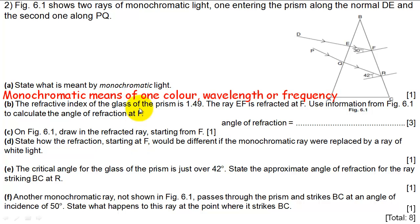Now it tells us the refractive index of the glass is 1.49. The ray EF is refracted at F. Use information from figure 6.1 to calculate the angle of refraction at F. I personally would sketch onto the diagram the refracted ray. We're going from a slow medium to a fast medium, so I'm expecting it to bend away from the normal line. The refractive index I was given is just the refractive index of glass, going from air to glass. What I actually need is the inverse of that, because this time the ray is going from glass to air.